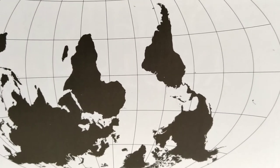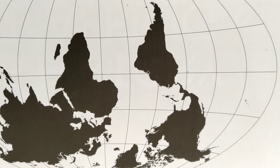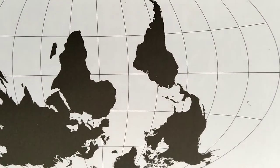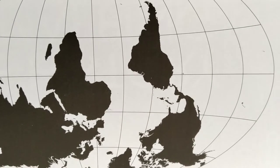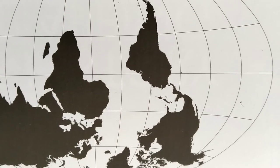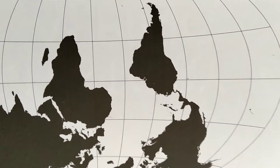The Mercator projection, centuries old and yet still broadly used, also distorts relative sizes of land masses in the high latitudes.